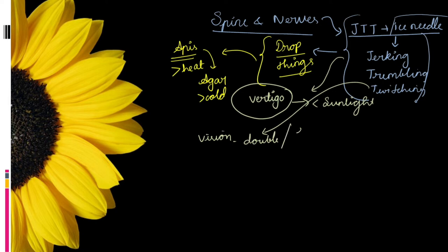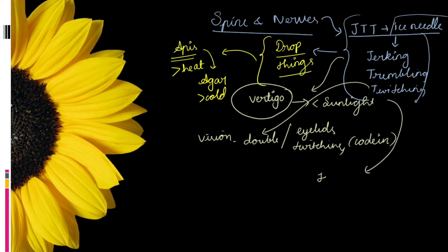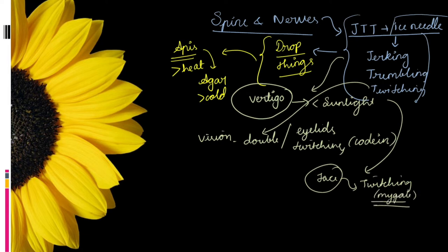There is twitching of the eyelids, which can be compared with Codine. In the face, twitching of facial muscles occurs, which can be compared with Mygale. The ice needle pricking sensation is also present all over the face — a neurological type of sensation. There is also trembling of the tongue.